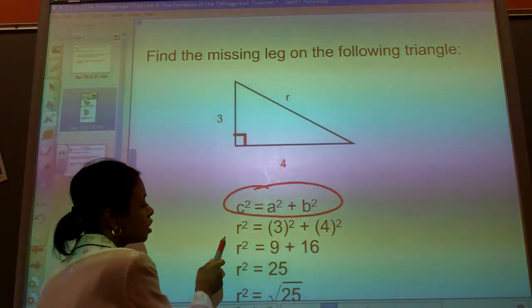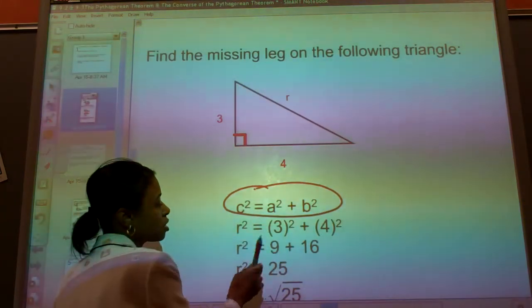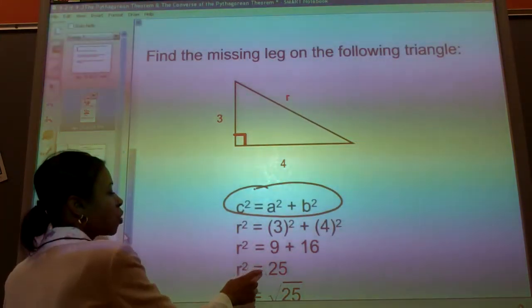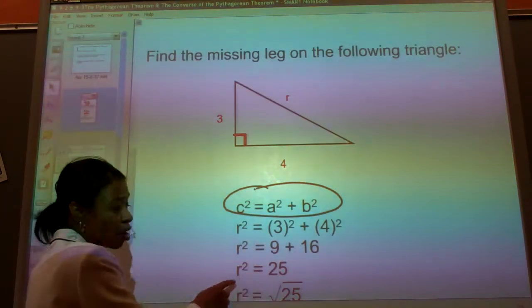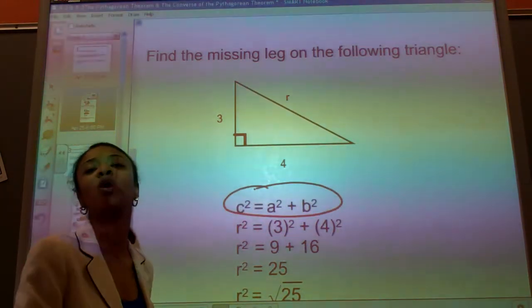So R squared plus A squared is 3 squared plus the second leg is 4 squared. By substitution, we plug the values in. R squared is equal to 9 plus 16. R squared is equal to 25. We know what R squared is. R squared is 25, but what is the value of R?